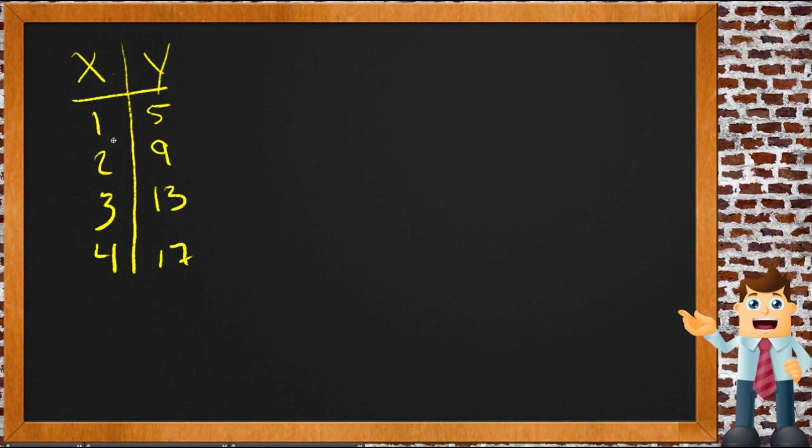What we're doing is writing the rule that takes one number on the left-hand side and makes it into the number on the right-hand side. Now there's a number of ways to do that, and that's often the case. There's often a number of ways to get between any one number and any other number, but what we need to do is find a rule that works for all of them.